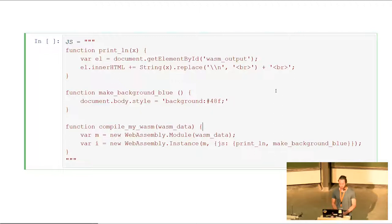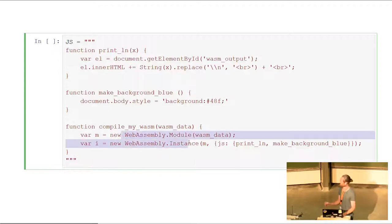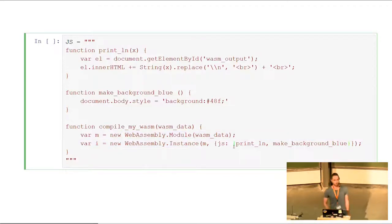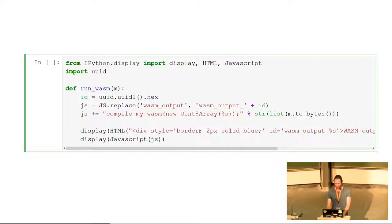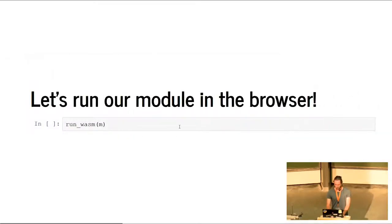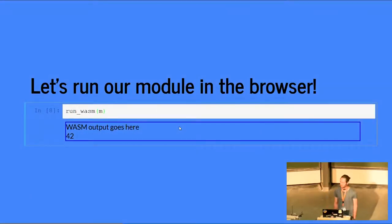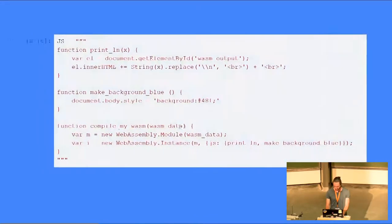So here we define a Python string with some JavaScript in there — we define the print_line function, the make_background_blue function, and a little function that does the actual compilation. The code here is really the browser API to compile the module, and in the end we provide it with a dictionary with the functions that our module needs. Now we have a binary representation and the JavaScript. The only thing left is to inject these two into the browser using IPython to bring it over to the browser. We can now run the module — the number 42 has been printed and the background has turned blue. I'm going to turn it back to grey because it's annoying.